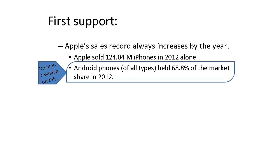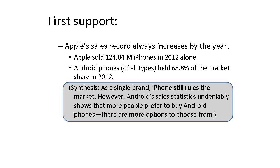However, with our binary thinking perspective, we then try to compare something in opposition to Apple's sales record. In this case, we're trying to find the closest opposition, which is Android. I found that Android phones of all types held 68.8% of the market share in 2012. Then we will have to synthesize these two ideas: as a single brand, iPhone still rules the market. However, Android sales statistics undeniably shows that more people prefer to buy Android phones, maybe because there are more options to choose from.